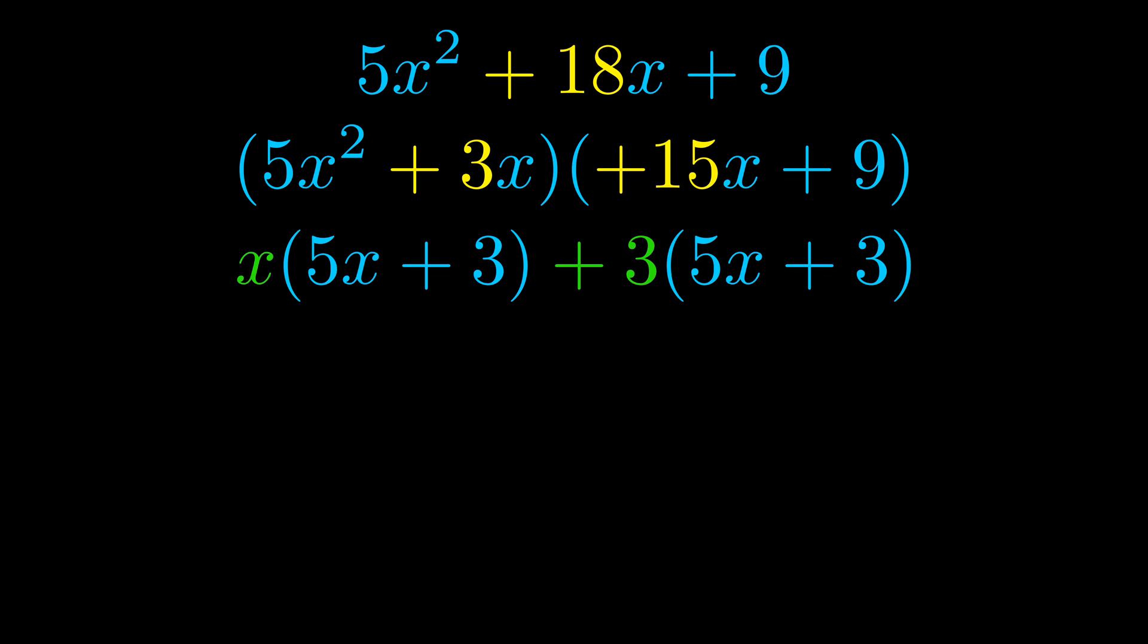Notice also how what remains inside of the parentheses is the same in both cases. The blue values are the same. Those blue values will become one of our factors and we will combine the two green values, the GCFs that we pulled out, to get the other one. And that is our fully factored equation.